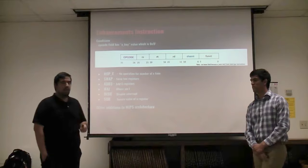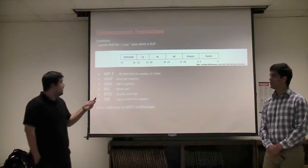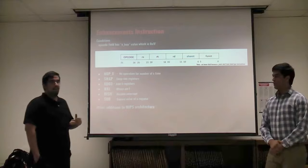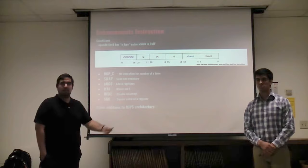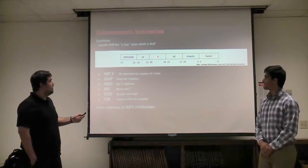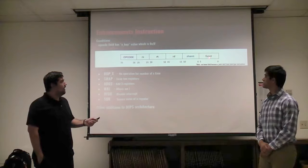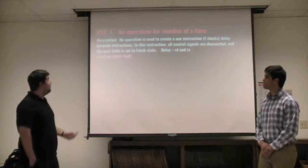Next are enhancements. We follow the R type instruction format, but in this case our opcode must be 1F. During the decode state, if it reads 1F in bits 31 to 26, it knows it's an enhancement instruction and goes into the enhancement instruction set. We then have two source registers RS and RT, a destination register RD, shift amount, and 6-bit function select.